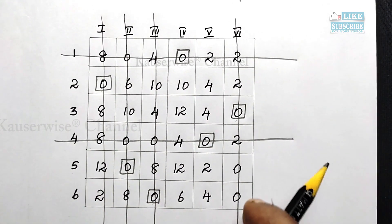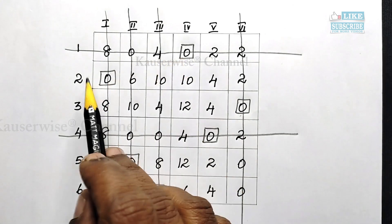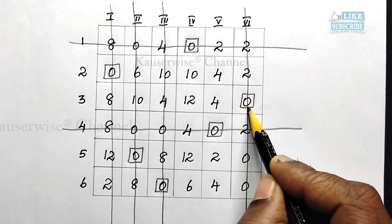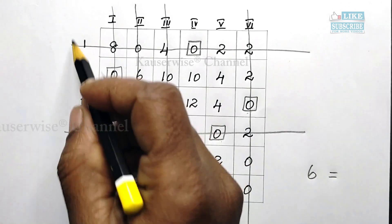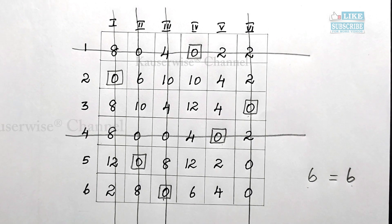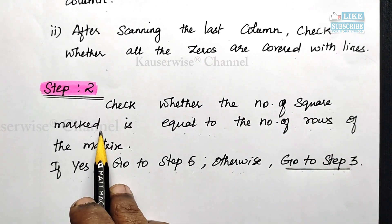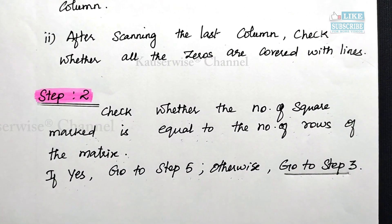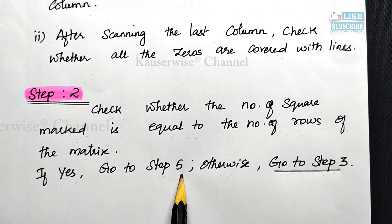After doing row scanning and column scanning, we check whether the number of squares marked is equal to the number of rows. The number of squares is 1, 2, 3, 4, 5, 6 — so 6 squares marked, which is equal to the number of rows, which is also 6. Both are equal, condition satisfied, and optimality is reached. Since the condition is satisfied, we go to step 5.